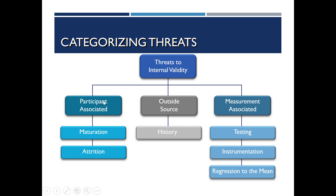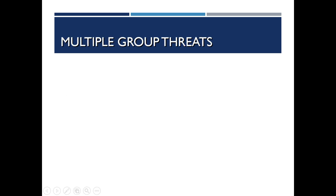We can have participant-associated threats like maturation and attrition, measurement-associated threats like testing, instrumentation, and regression to the mean, and then one outside source threat, which is history. Now let's move on to multiple group threats — threats that happen when there are two or more groups in a study, as opposed to the single group case like the one-shot case study or the one group pre-test post-test design.